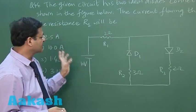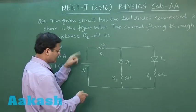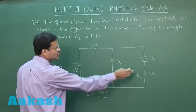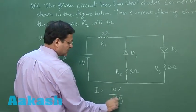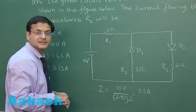So 2 plus 2, 4. So what is the current? They are asking the current flowing through the resistance R1. So this current will be nothing but this 10 volt and 2 plus 2 that is 4 ohm. So in total the current will be 2.5 ampere and this will be passing through R1 as well.